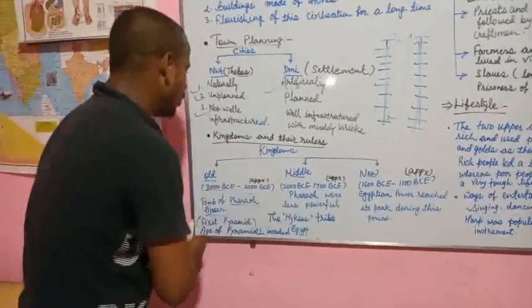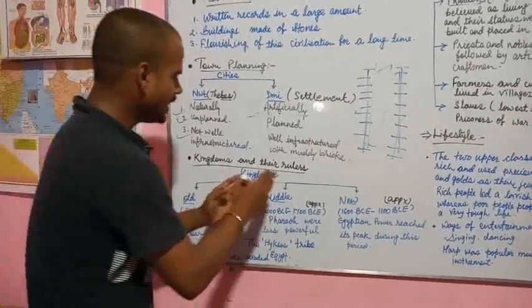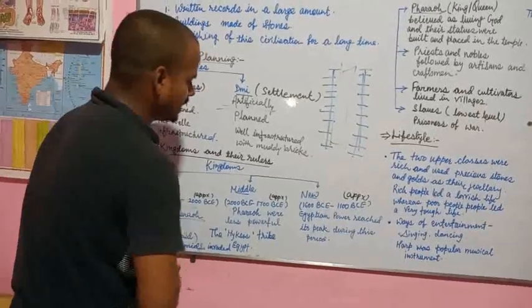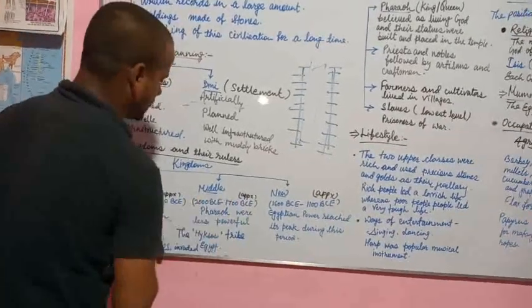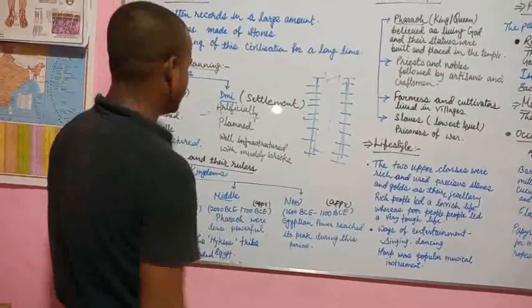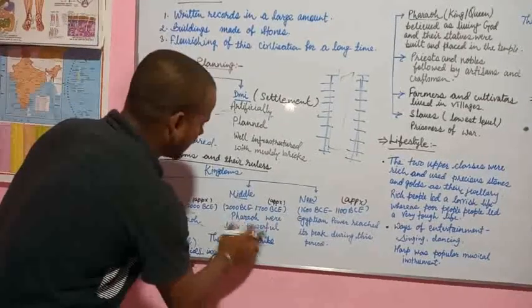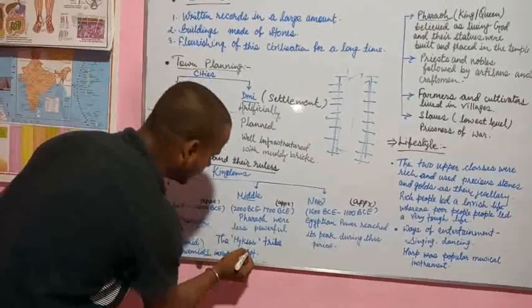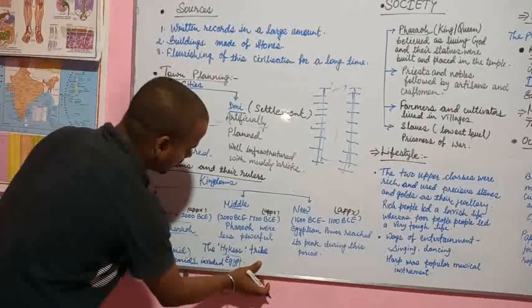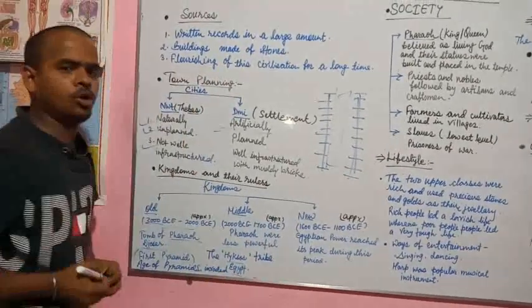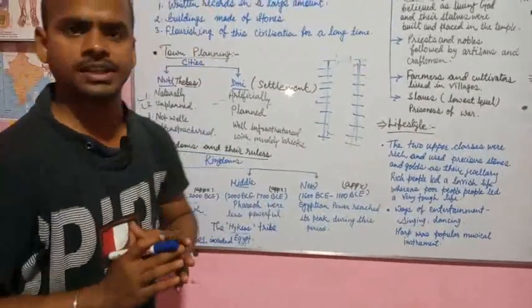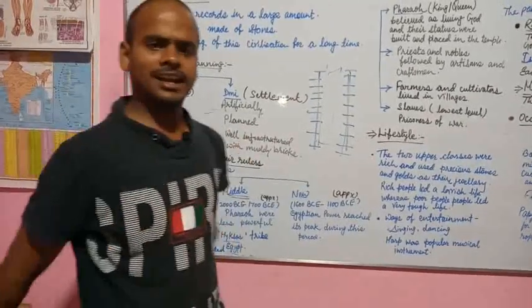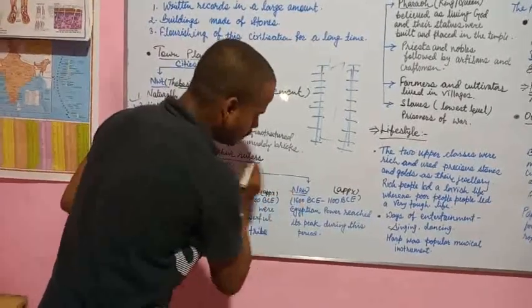Middle Kingdom. The period of middle kingdom is 2000 BCE to 1700 BCE and pharaohs were less powerful.